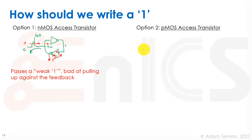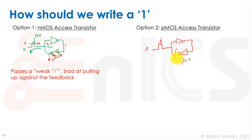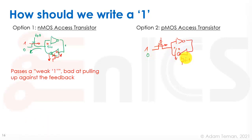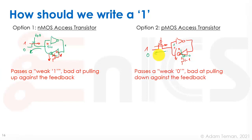Option two is to use a PMOS write transistor instead. A PMOS can robustly drive a 1, potentially overcoming the internal NMOS pull-down. But the same problem arises in reverse: when writing a 0, we're fighting a strong PMOS inside the cell that's holding the node at 1. A PMOS passes a weak 0, and it's bad at pulling down against the feedback.